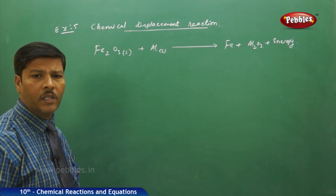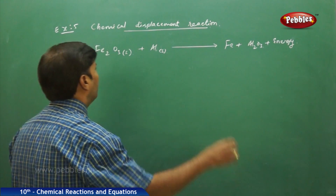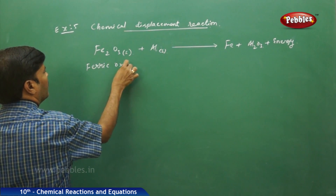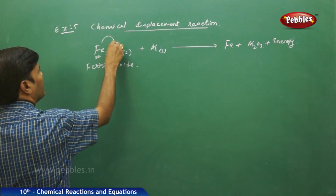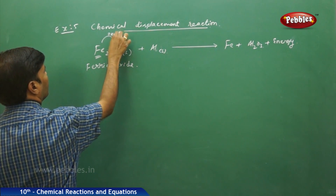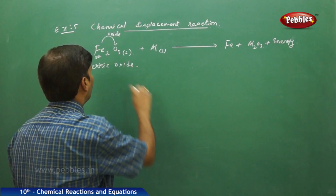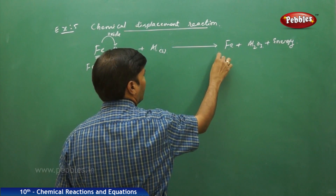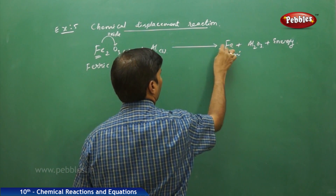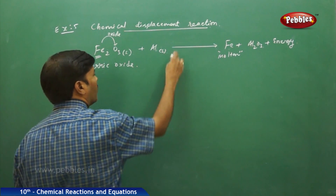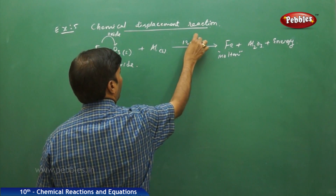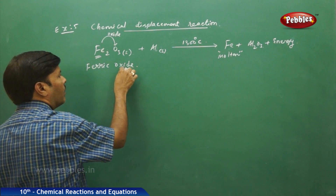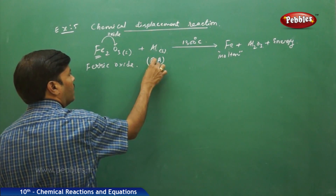This is a displacement reaction because here we have ferric oxide, where iron is in the form of oxide. This oxide of iron is getting reduced to molten iron — the temperature is not less than 1300 degrees centigrade. The purpose of adding aluminum metal to this ferric oxide is to behave as a reducing agent.